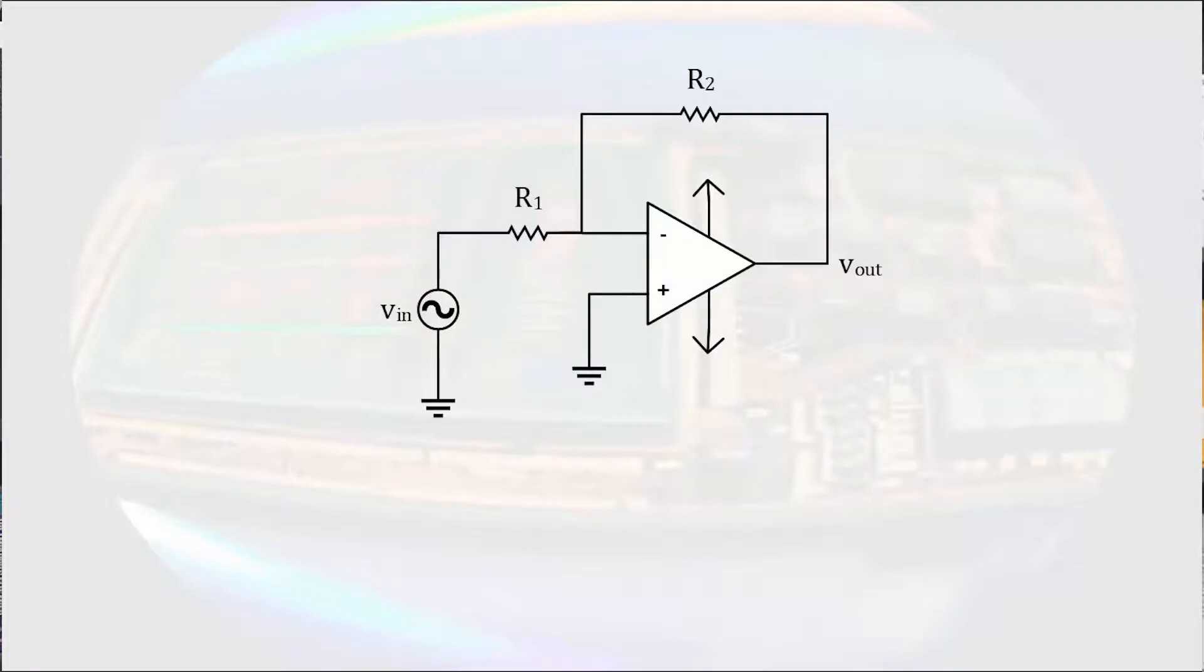If we look at the basic assumptions we make when analyzing ideal operational amplifiers, we can trace each of them back to a property of the amplifier. When we say there is no voltage difference between the input terminals, that is because we approximate the amplifier to have an infinite open-loop gain.